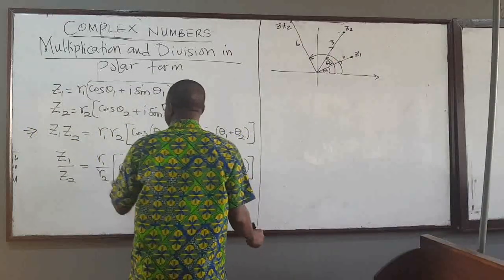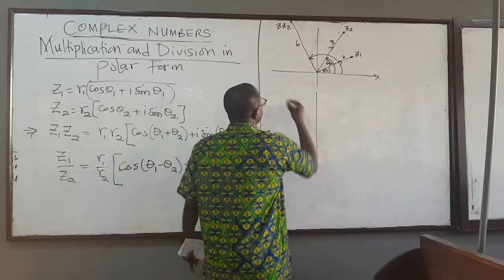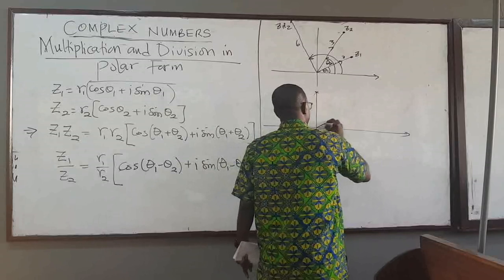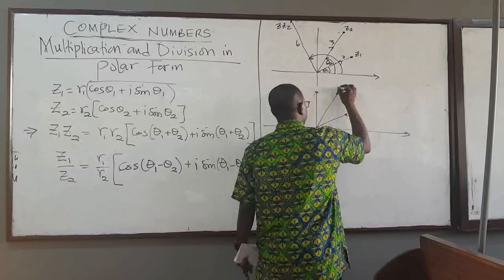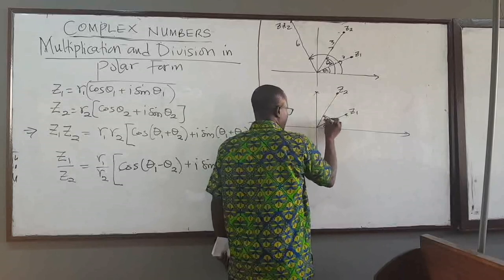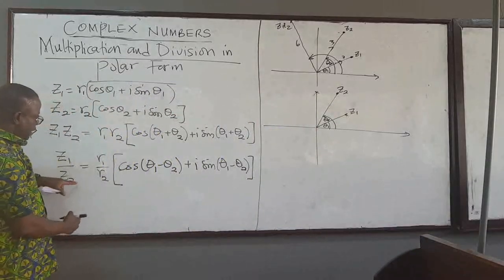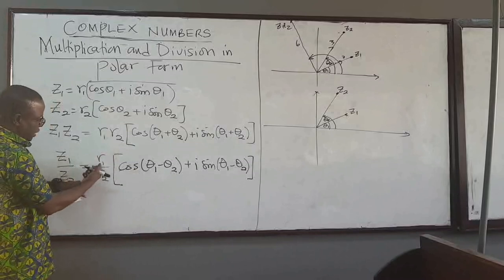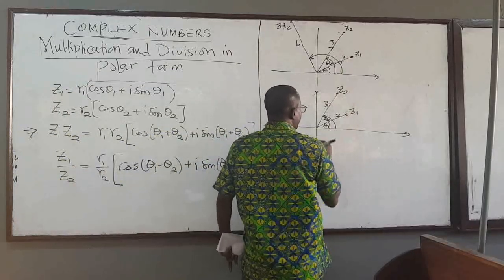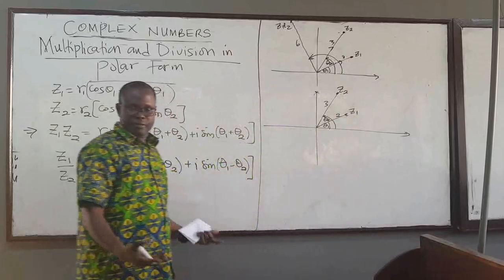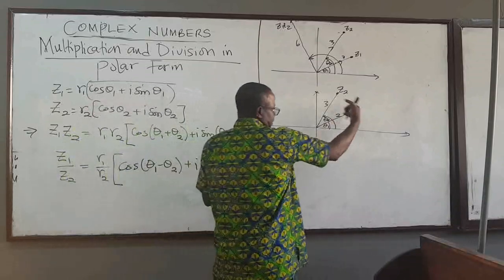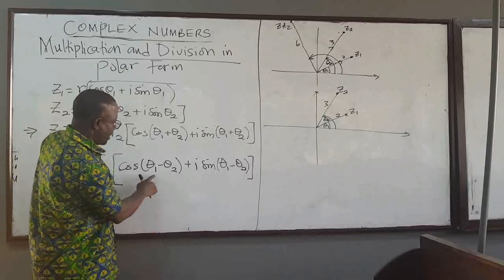And if you divide the two complex numbers z1 and z2, let's assume we have z1 at angle theta 1 and z2 at angle theta 2. If I divide them, the resulting modulus will be r1 divided by r2. Using the same numbers — r1 is 2 and r2 is 3 — so I'm going to divide by 3. The distance is going to be shorter than both of these; it's going to be r1 over r2.